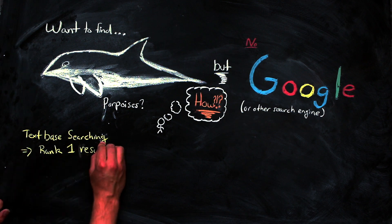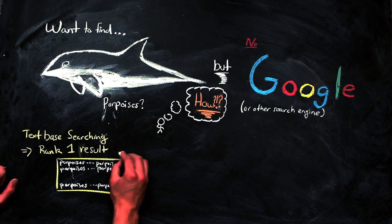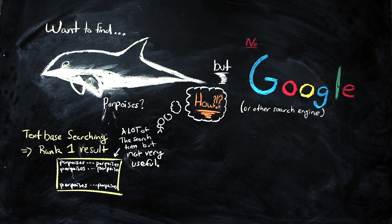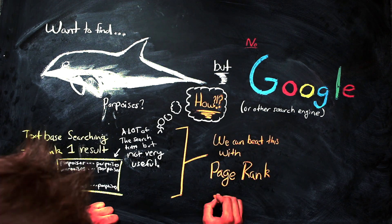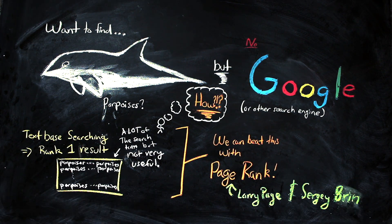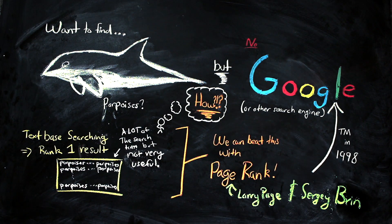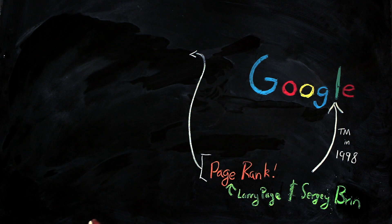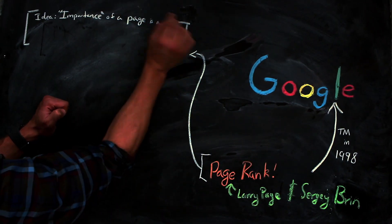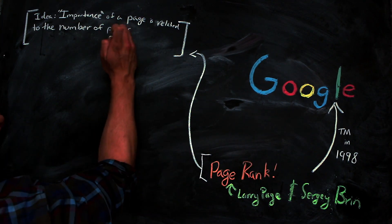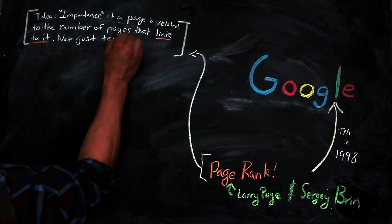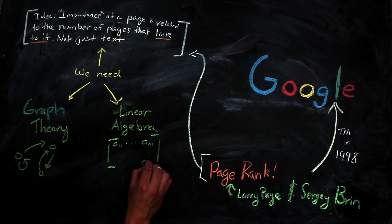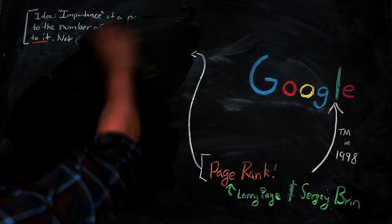Searching directly for text will give you a lot of pages, but not necessarily the ones you're looking for. One method to combat this that is fairly well known is the PageRank algorithm, which was created by Larry Page and Sergey Brin. In order to talk further about this, we're going to need to use some graph theory and some linear algebra.